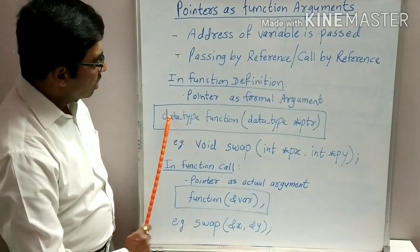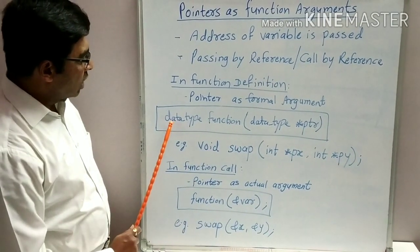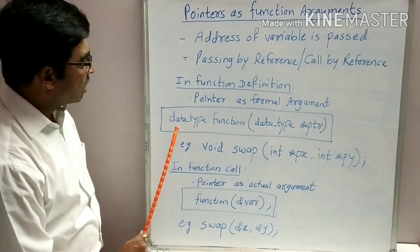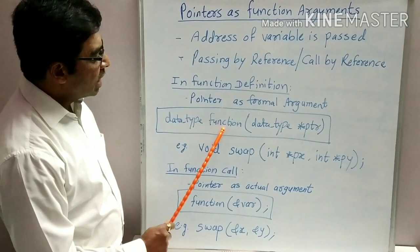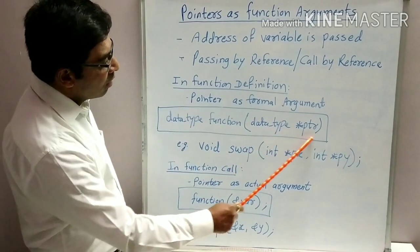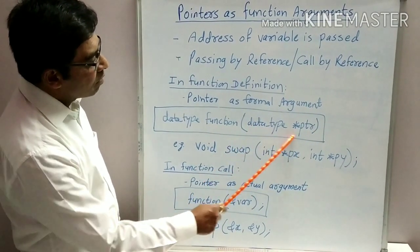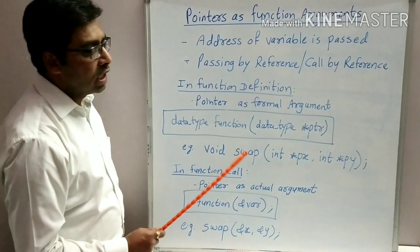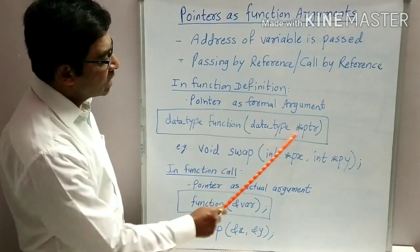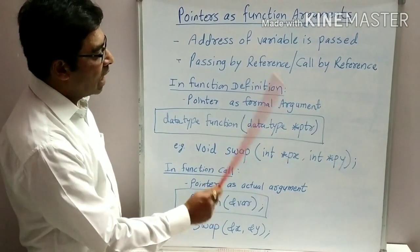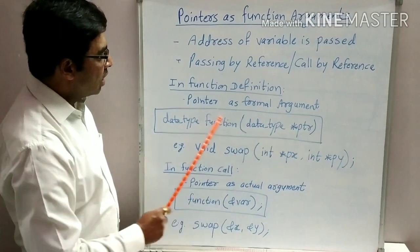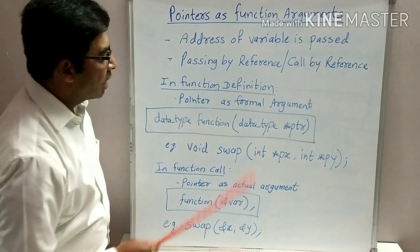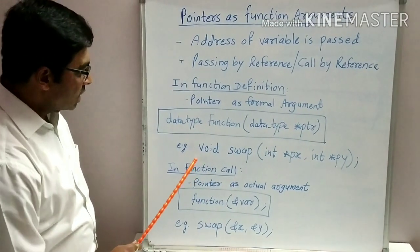This is the first line of the function definition. As usual, this is the return type — that is the data type of the return value of the function — followed by the function name. In the formal argument, you have to declare the pointer. As we saw in lecture 1, how to declare the pointer — the same step you write here: data type star PTR. In this way, in the function definition, the formal argument is specified.